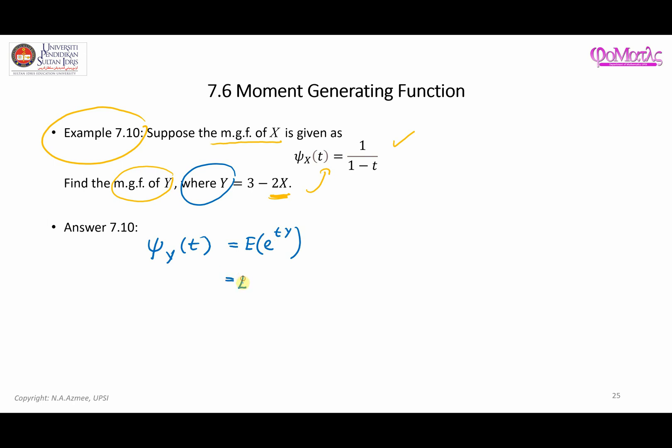Again, we are going to find mgf of Y. Let me just start by writing it explicitly. mgf of Y. This is what we are looking to find out. And the starting point for that is, of course, to find the expected value of e^tY. That's it, basic definition. Now, you can just replace Y with the representation given here. So it is 3 minus 2X.